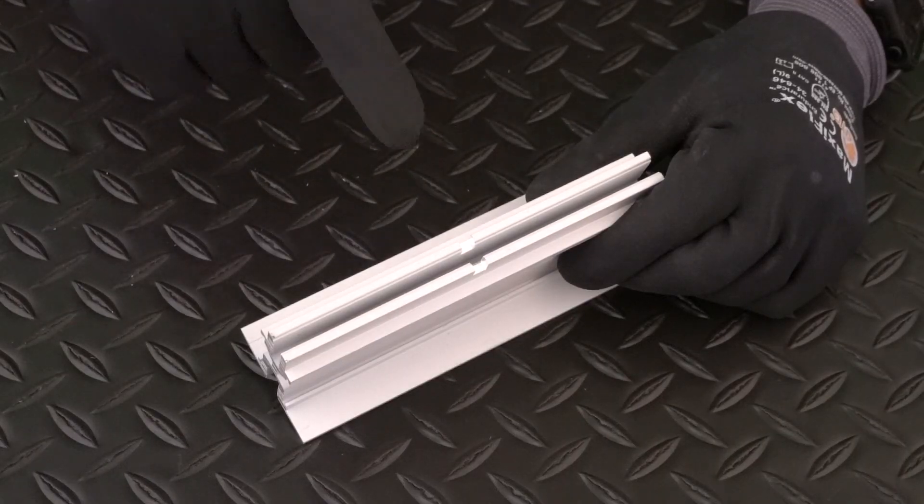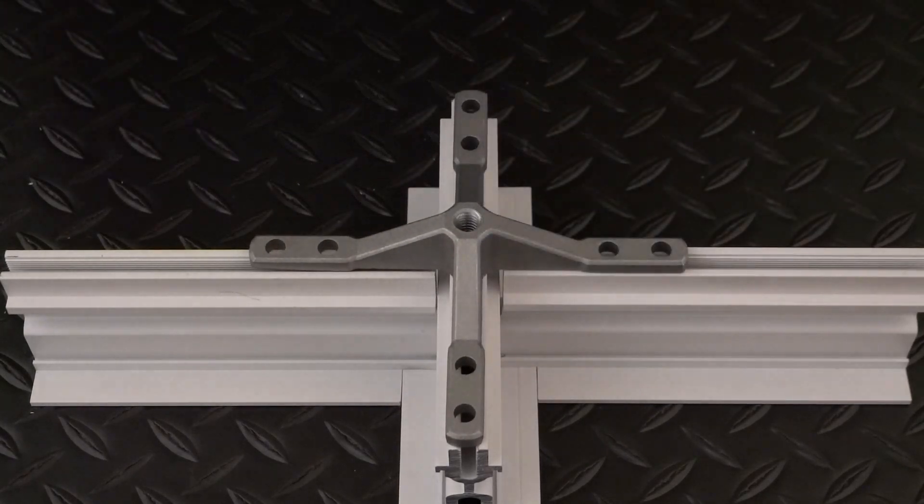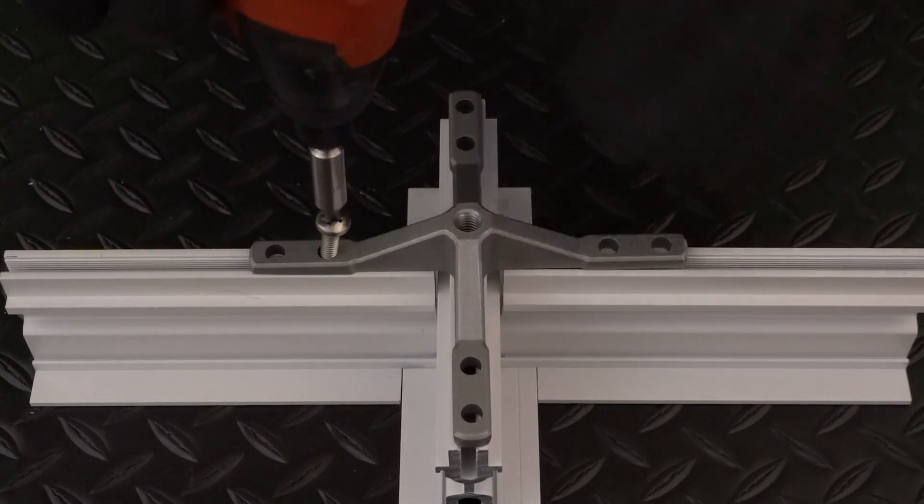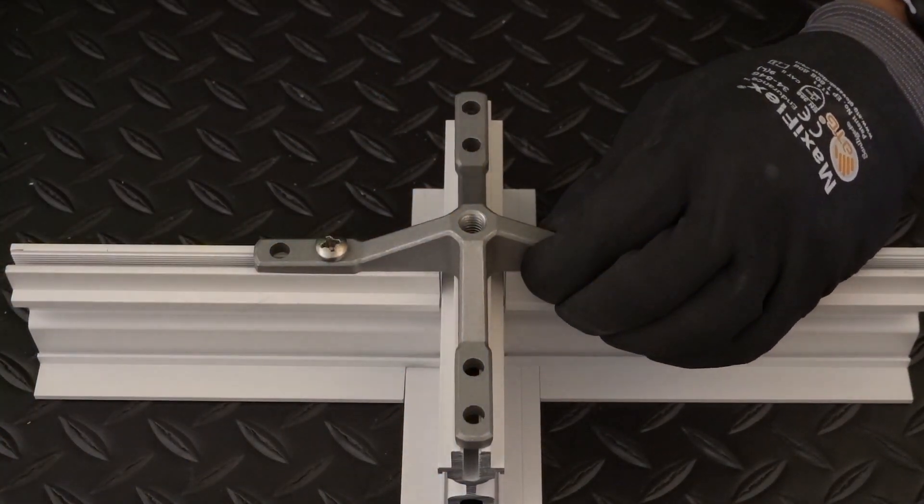To streamline installation, we have factory cut notches two foot on center along the mains which accommodate the main to cross tee brackets. Notches also eliminate layout measuring on the job for faster production rates.